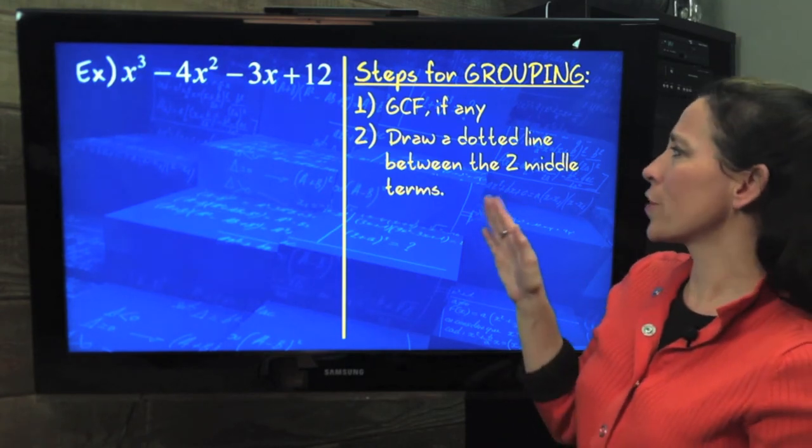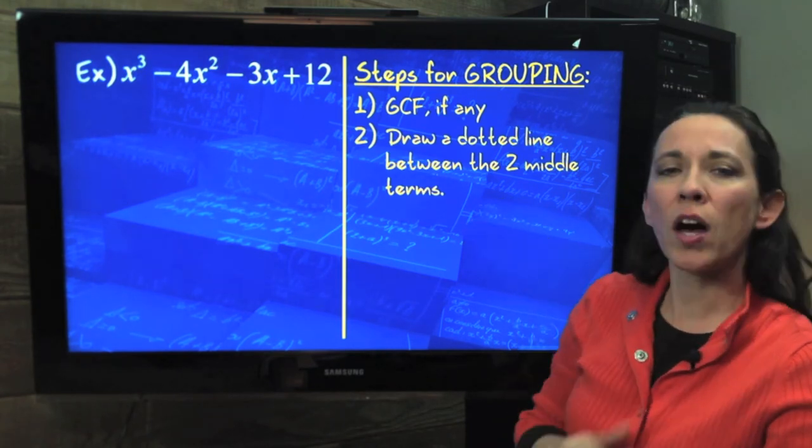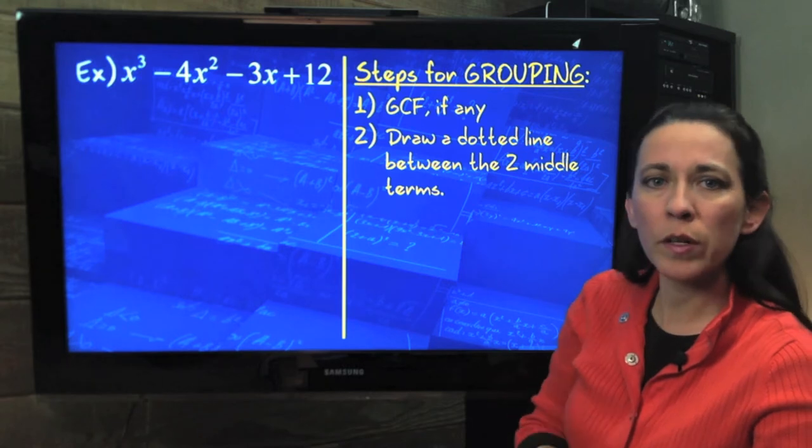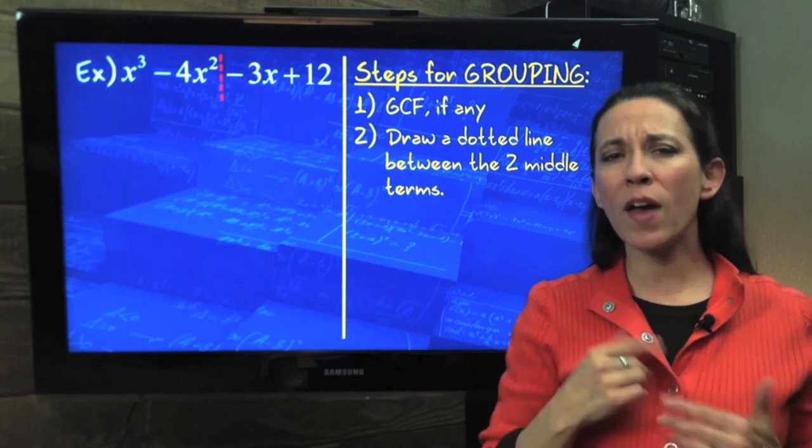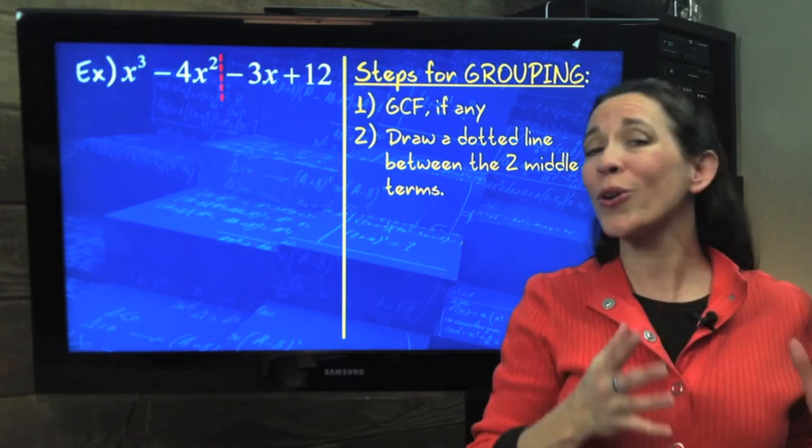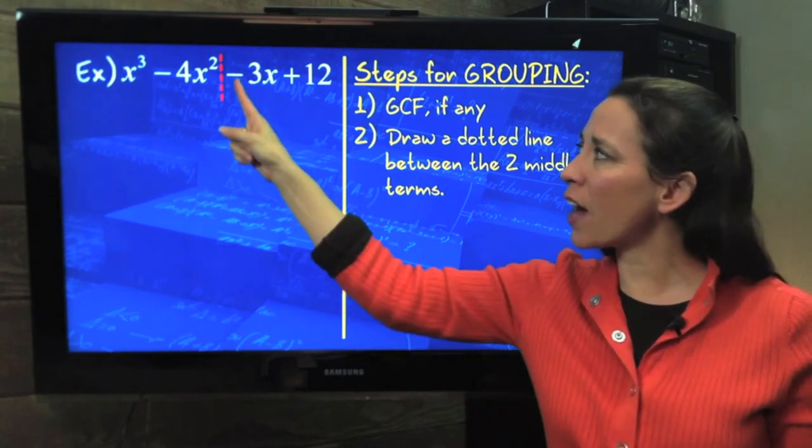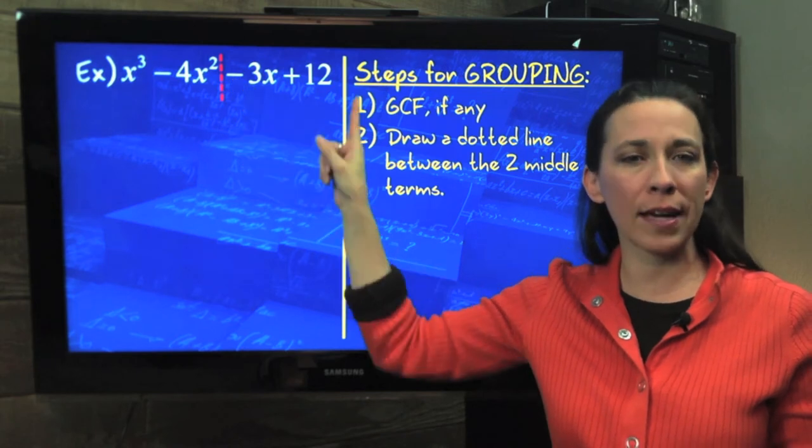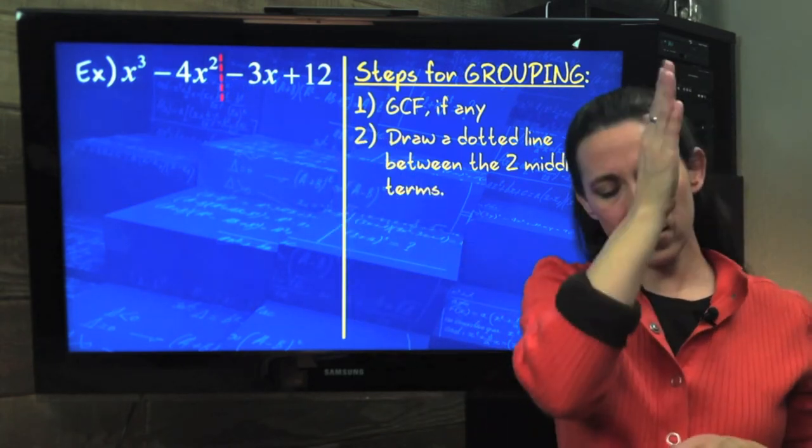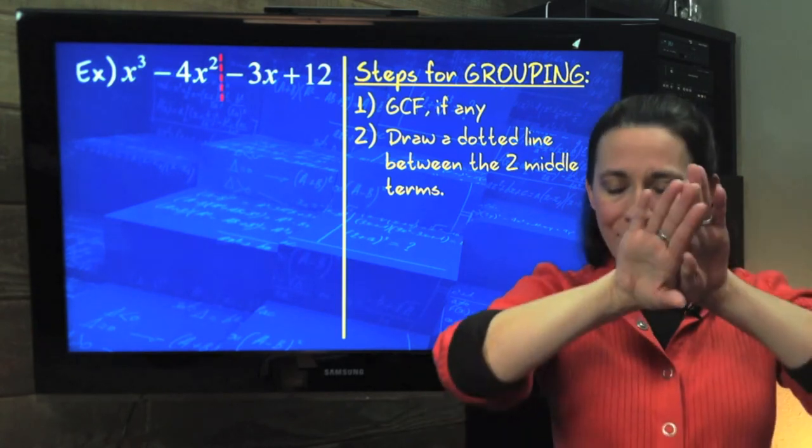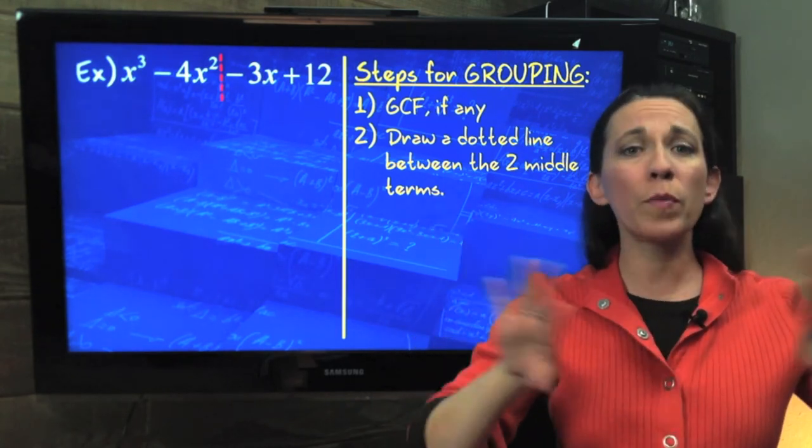Now, my first step here is to draw a dotted line between the two middle terms. Some teachers teach to put parentheses, and that's fine, but you have to be very careful as to where you put the parentheses, and especially how you treat it when you have a negative here on the second half. So what I do, instead of drawing parentheses right away, I just kind of draw a dotted line down the middle.